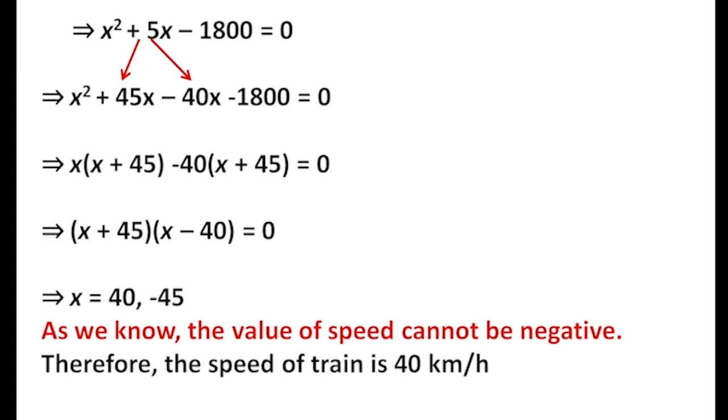So the answer is the speed of the train is 40 kilometers per hour. If you want to solve using both methods, splitting the middle term and the quadratic formula, I will give you a link in the description box.